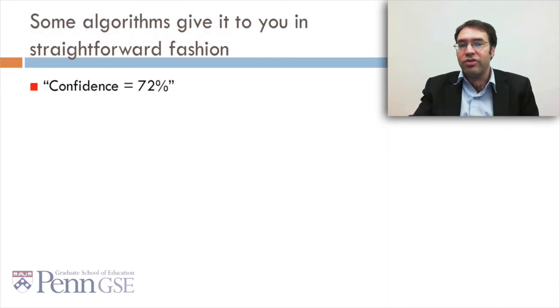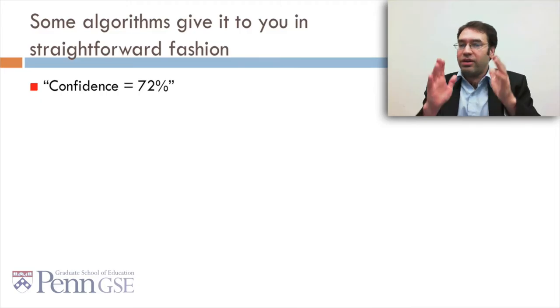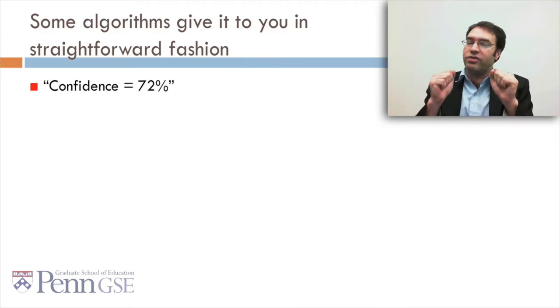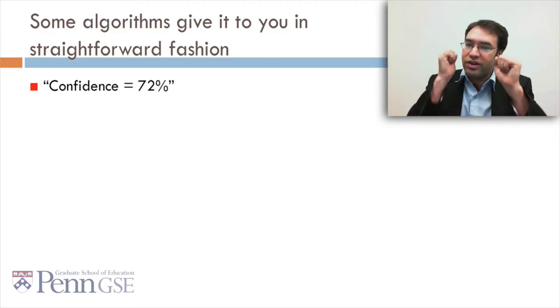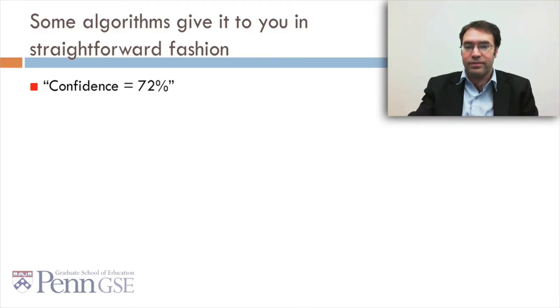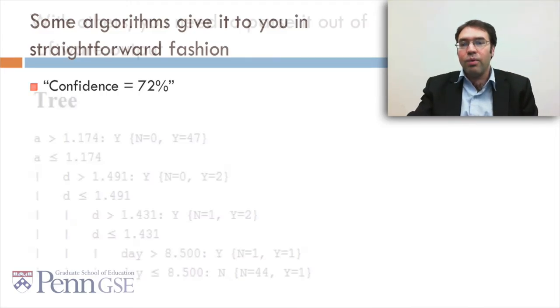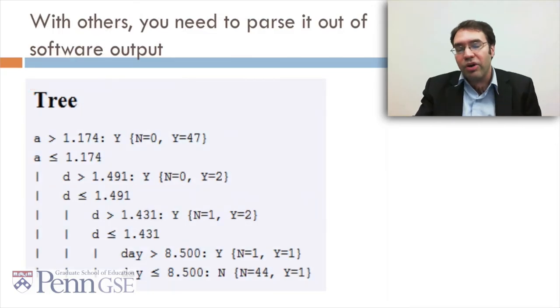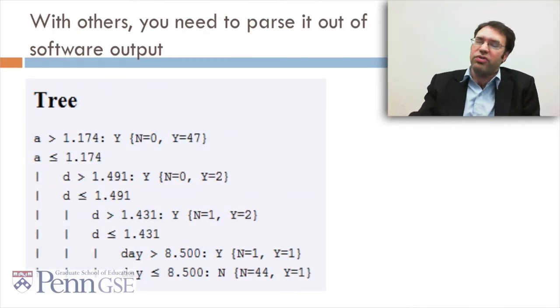Some algorithms give you confidence in a straightforward fashion — they just say my confidence for this decision is 72%. With others, you need to parse it out of the software output, which really is pretty straightforward.